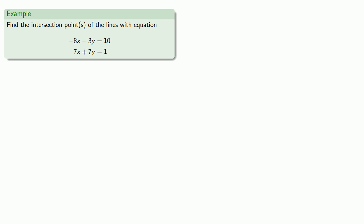As a general rule, even if you're trying to solve a geometric problem like finding out where two lines intersect, it's better, if at all possible, to solve the problem algebraically. It will give you more precise answers. So if you want to find the intersection point of the lines with equations -8x - 3y = 10 and 7x + 7y = 1, we'll try and solve this as a system of equations.